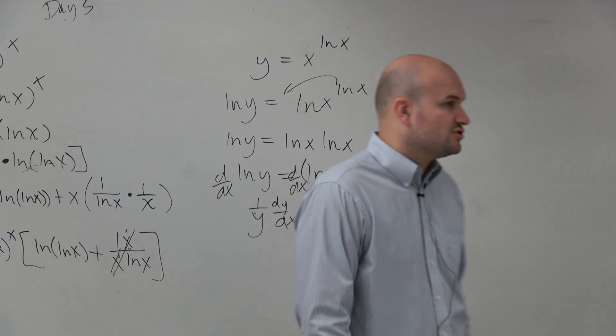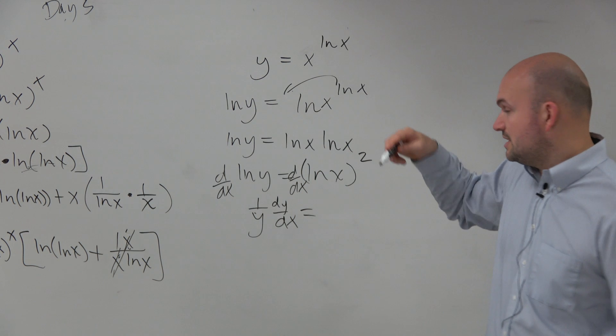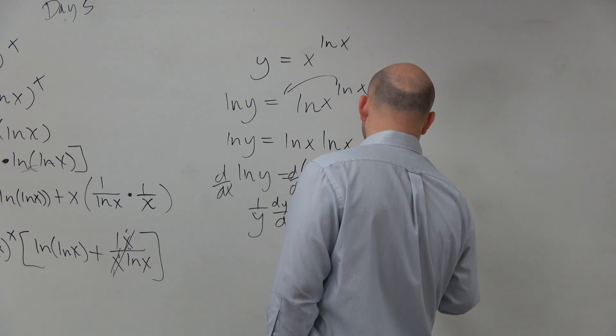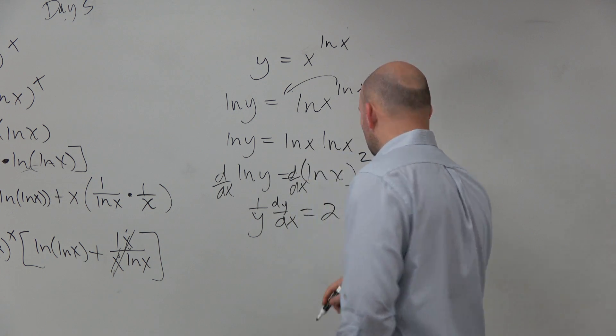Derivative of ln of x squared, I can apply the chain rule, which is equal to 2 ln of x times 1 over x, right?